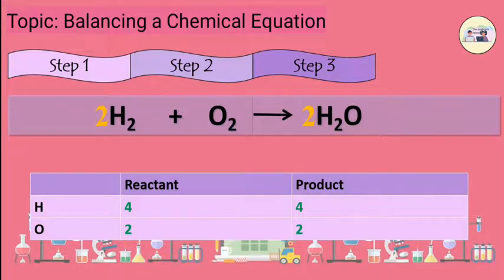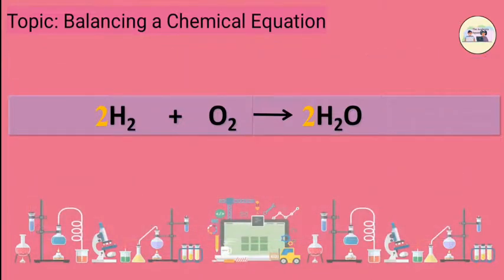Step 4: Write the final balanced equation. So, 2H2 plus O2 gives 2H2O. This is the final balanced equation.